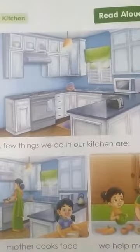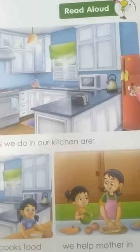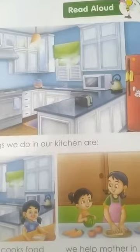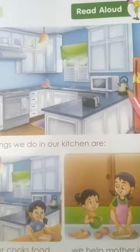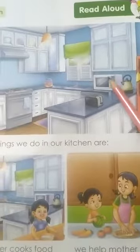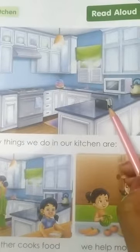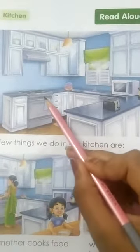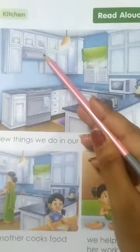Now kids, read with me. What is this? Fridge. Refrigerator. What is this? Kettle. Kettle. What is this? Microwave. Microwave. What is this? Toaster. Toaster. What is this? Gas. Chimney. Chimney.